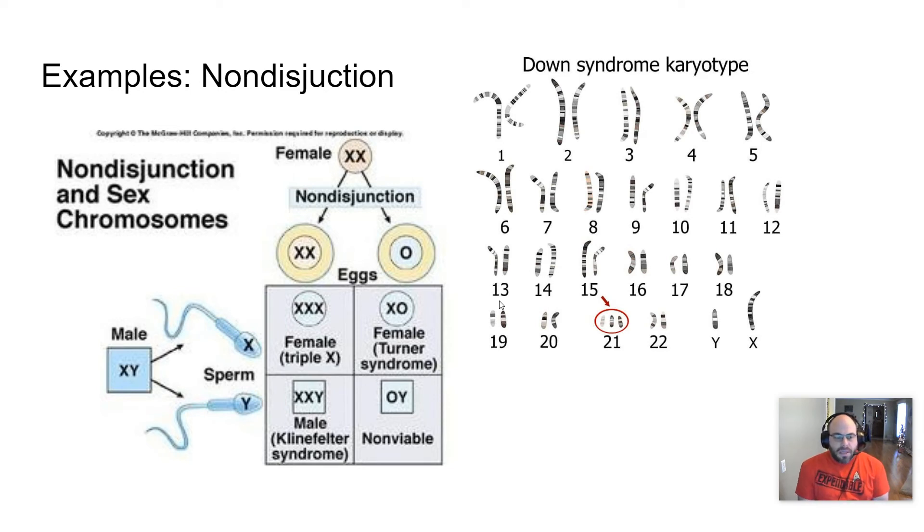And so here's some examples, nondisjunction on sex chromosomes. So you have a normal male XY and a female that has a nondisjunction where one of the eggs has XX instead of just an X, and the other egg has nothing. And so since the X chromosome is required to live, the 0Y is a non-viable offspring. The XO, so 1X and just nothing else, is something called Turner syndrome.